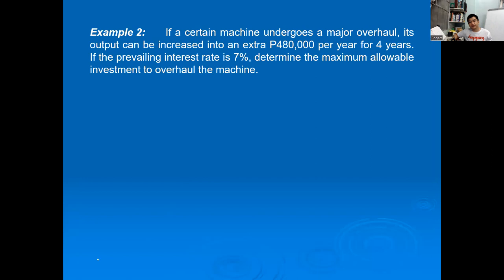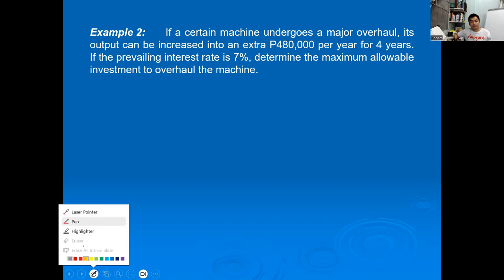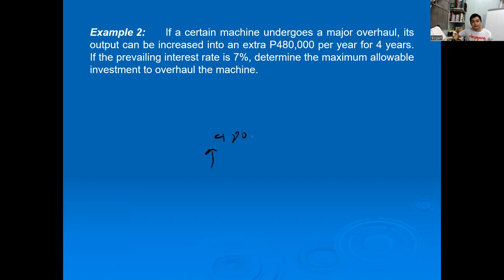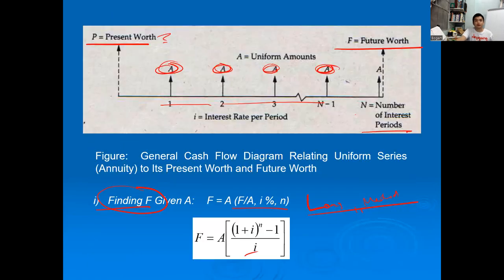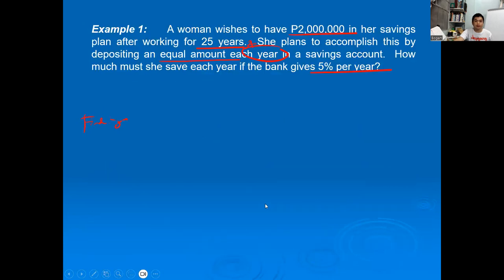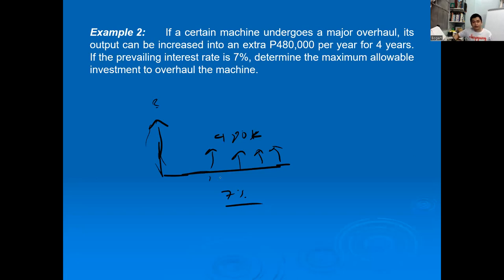Problem 2: If a certain machine undergoes a major overhaul, its output can increase by an extra 480,000 per year for 4 years. If the prevailing interest rate is 7%, determine the maximum allowed investment to overhaul the machine. Drawing the cash flow: we have 480k per year for 4 years. What should our investment be? That's the present worth, which is unknown, at a rate of 7%.